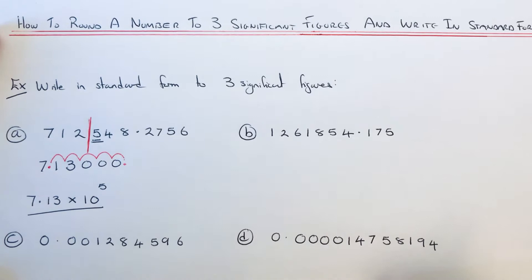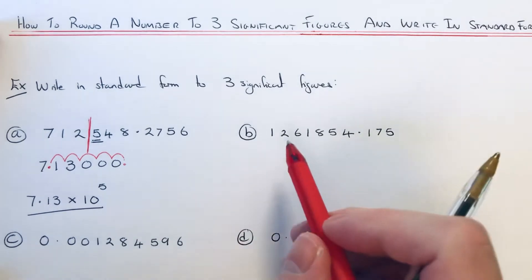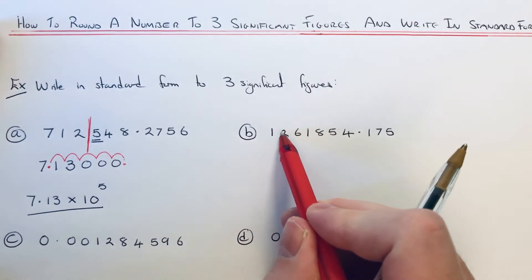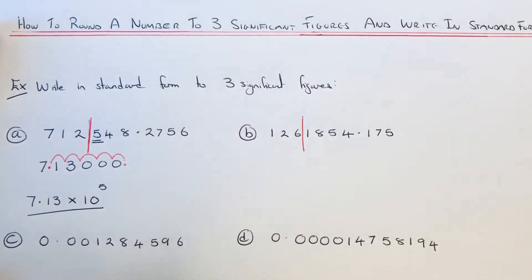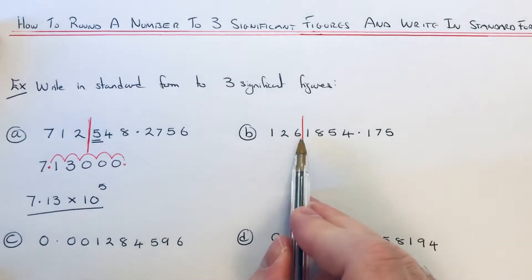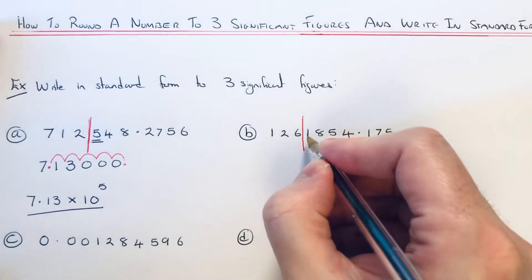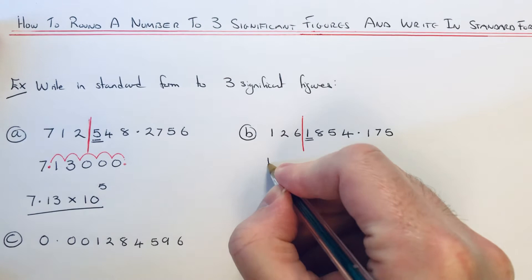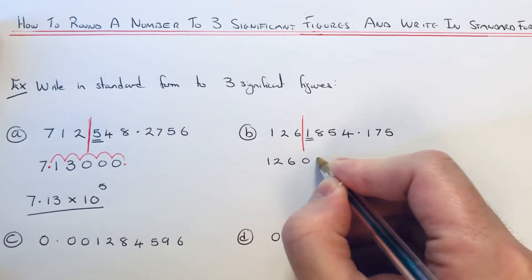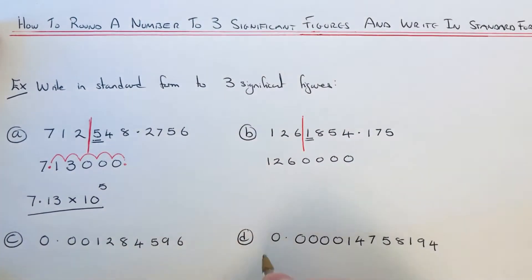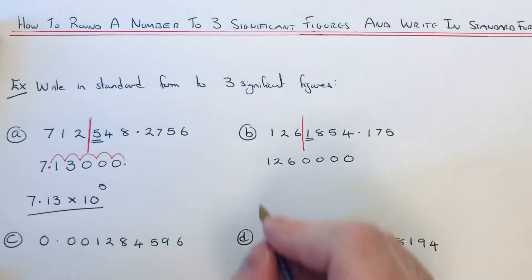Let's have a look at part b. Again, write in standard form to three significant figures. If we count three numbers from the start: one, two, three — this would round to 126 because the next number is a one. We fill in zeros up to the decimal point.